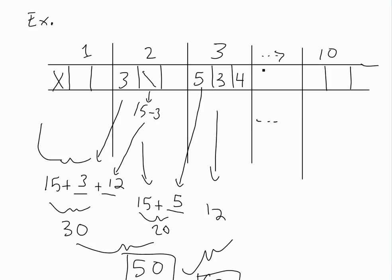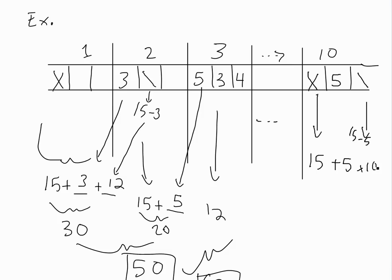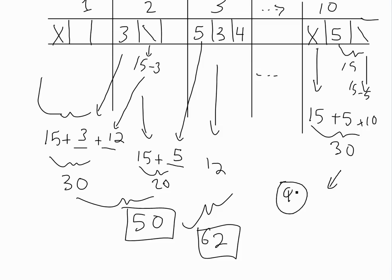For the 10th frame — even if you get a strike, then a 5 and a spare — you just count them straight. That's 15 plus 5 plus (15 minus 5) = 15 + 5 + 10 = 30. This 30 adds to whatever you had after the ninth frame. If the ninth frame had a spare or strike, you'd add these next throws just like the earlier examples.